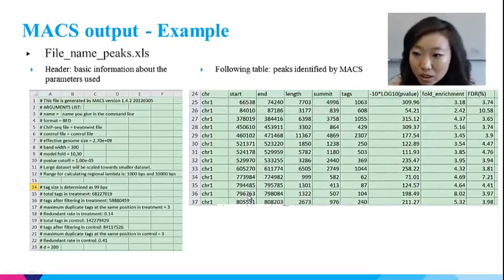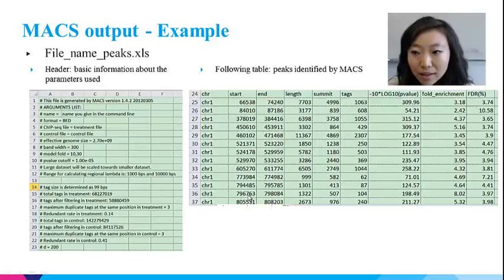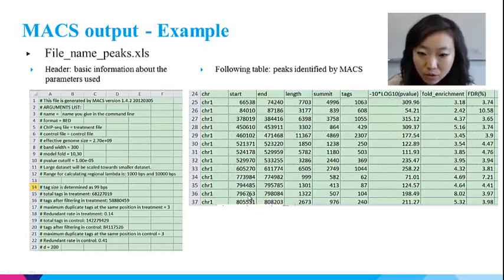This is how the peaks Excel spreadsheet looks. The parameters are summarized at the beginning and the peaks are listed below. For each peak, it gives the location of the peak, the length of the peak, where the summit of the peak is in terms of bp from the start of the peak, and how many tags are mapped to this peak. It also gives the fold enrichment and the p-value compared with the control dataset. The last column gives a false discovery rate, which can be used to narrow down the total number of peaks.